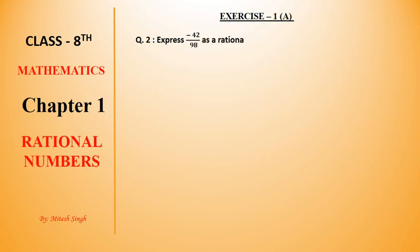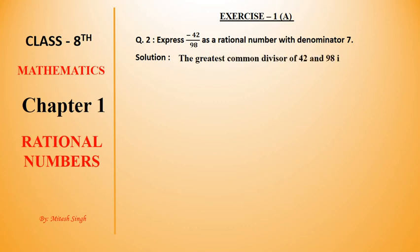Question number 2: Express minus 42 upon 98 as a rational number with denominator 7. We need to express minus 42 upon 98 such that the denominator becomes 7. Our current denominator is 98 and we need to replace it with 7. Let's see the solution. First of all, we check the greatest common divisor of 42 and 98.